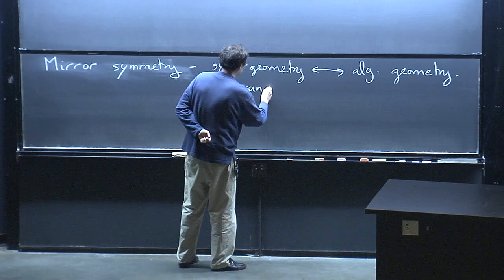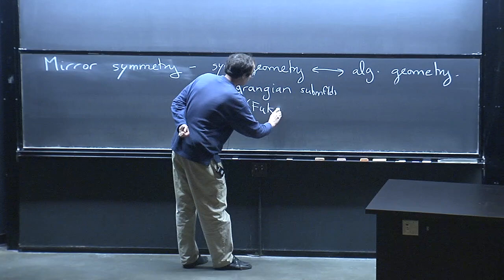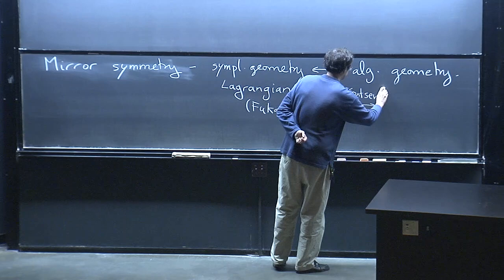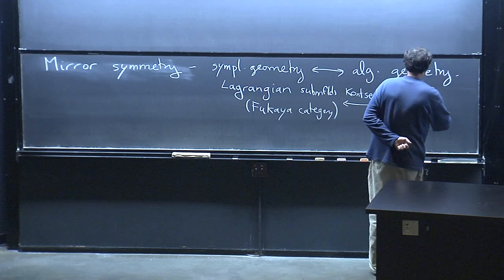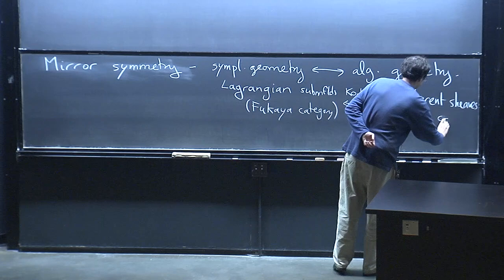These Lagrangian submanifolds are organized in something called the Fukaya category, which I will try to give you an introduction to. Kontsevich's homological mirror symmetry conjecture says that Lagrangian submanifolds on a given symplectic manifold should correspond roughly to coherent sheaves on the mirror space. The key object is the derived category.